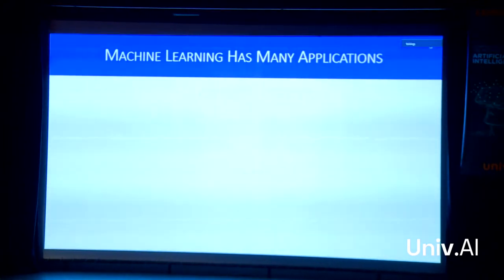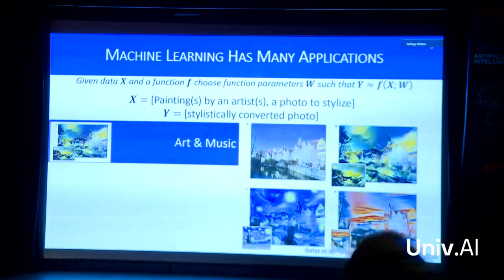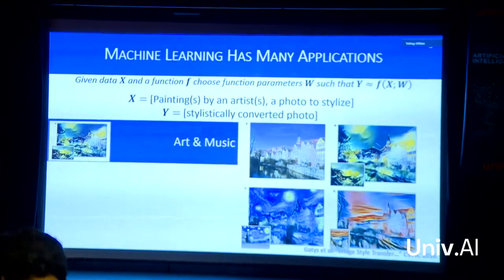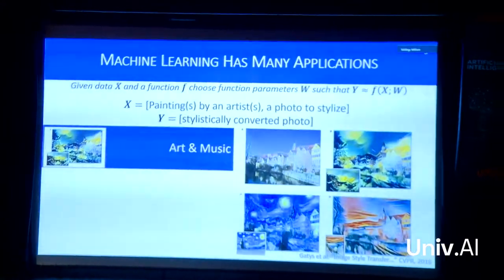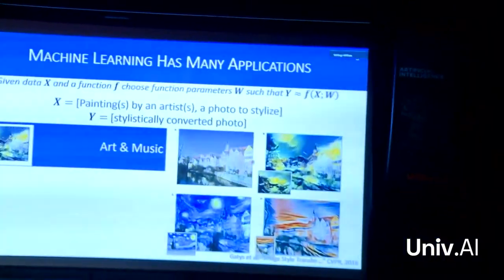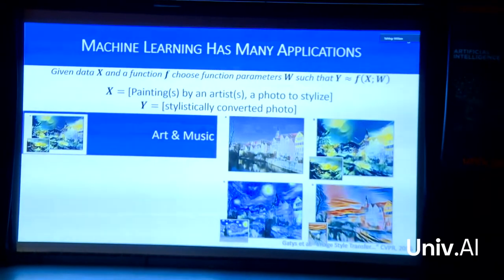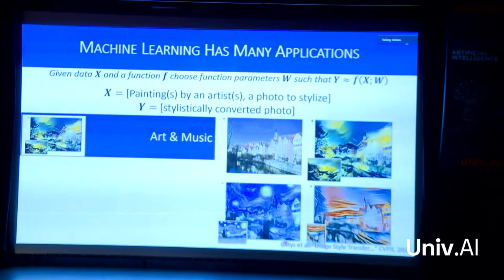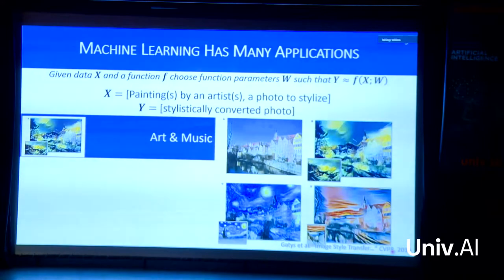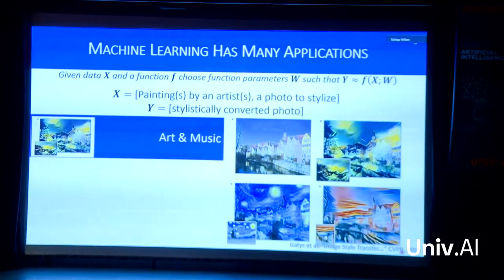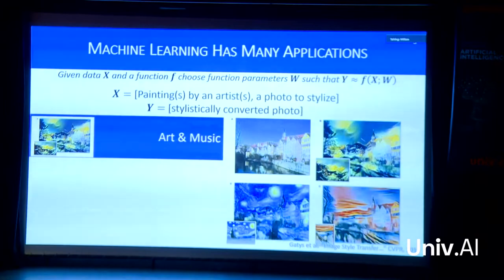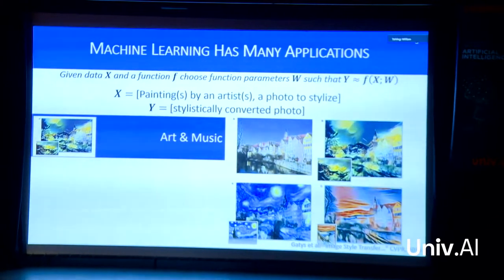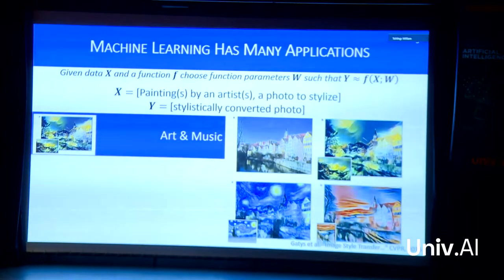There are lots of applications of machine learning. Just to show you how cool it is, I'll start with a couple of recent papers. You can use it for artistic endeavors — they took a picture of a canal and some buildings, and re-stylized it based on famous painters. Down here we have it in the style of Van Gogh's Starry Night, and on the right in the style of The Scream. That's a machine learning algorithm taking pictures by famous painters and a photo, and outputting a stylistically converted photo.